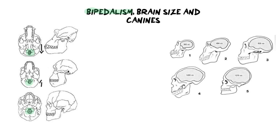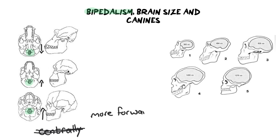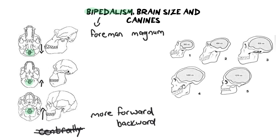The first organism has its foramen more backward, the middle organism has moved slightly forward, and then the human has it way more forward. A word we really want to avoid in tests and exams is the word 'central' or 'centrally' — please do not use this word when you talk about the foramen magnum. Instead, you should use 'more forward.' If you're trying to describe the fact that it's further back, just say 'more backwards.' The more forward the foramen magnum is, the more bipedal the organism was — meaning they were upright and walked on two legs, holding all their body weight over the center of their body.